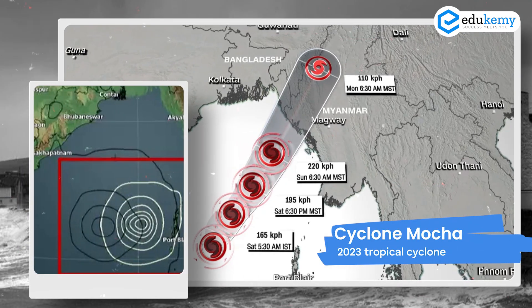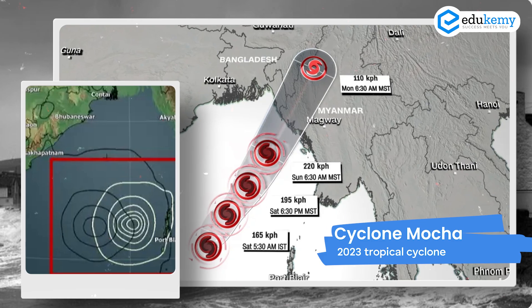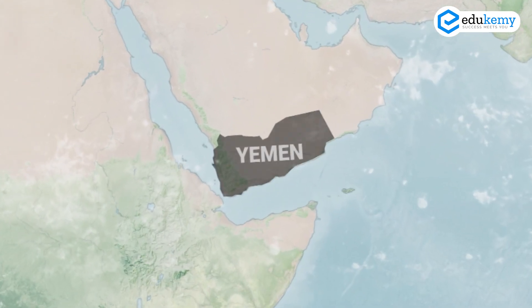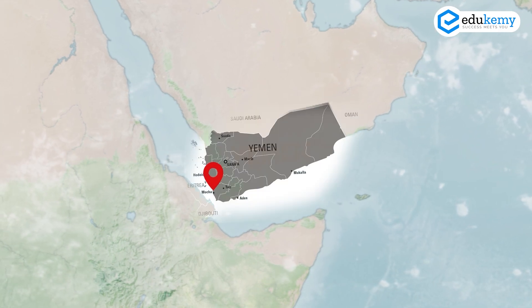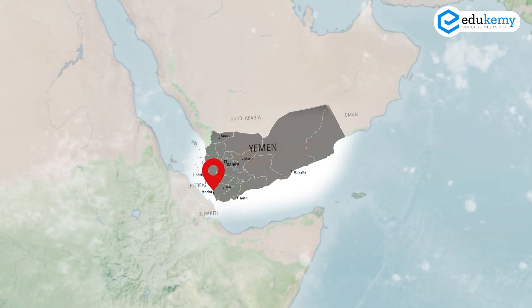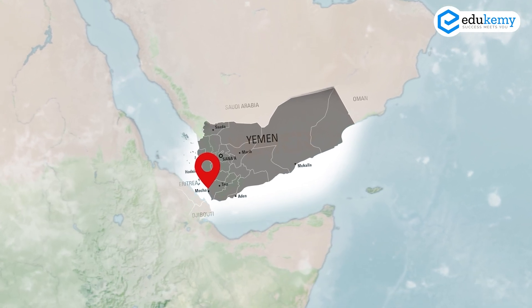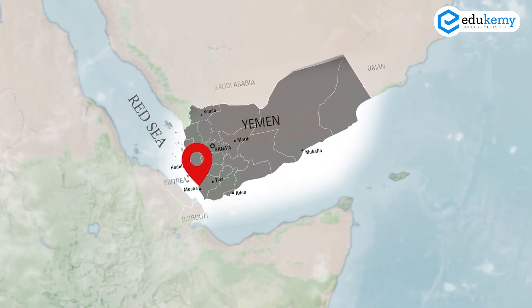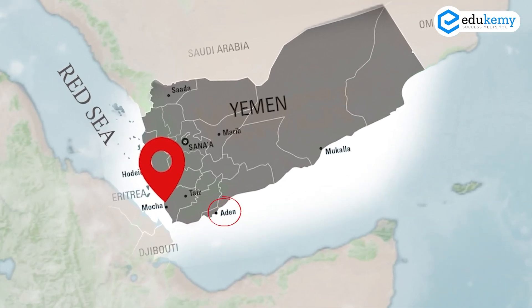Mokka Cyclone is a cyclone of Bay of Bengal and it is named after a place in Yemen called Mokka. You must look up where Mokka is — it is in the southern part of Yemen bordering the Red Sea, just after the Babel Mendeb. It is not in the Gulf of Aden. Please locate it — where is Aden, where is Sana'a, and where is Mokka.